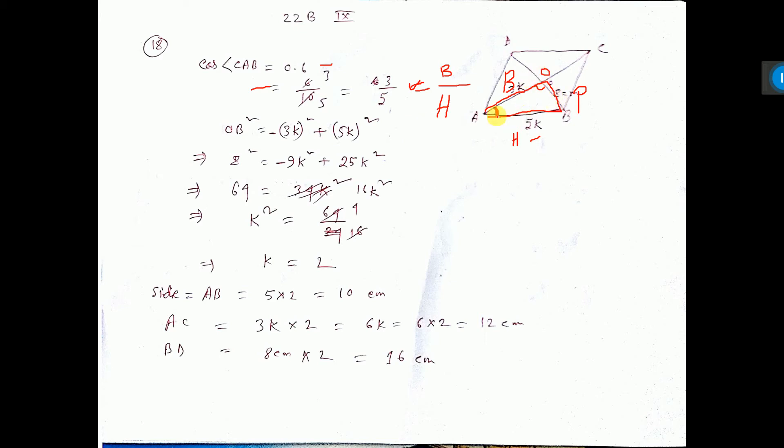Now OB square is equal to hypotenuse square minus base square. So 5K square minus 3K square. See here, 5K square minus 3K square. Here I have written 3K square 5, so I give minus here. So 16K square.